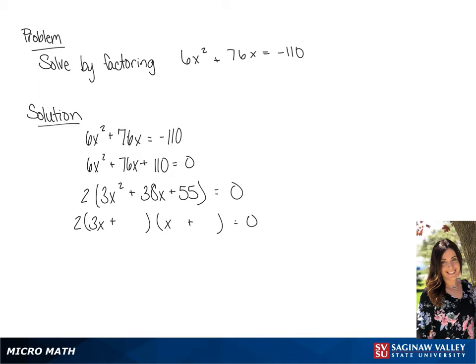And our second terms are going to be factors of 55. So we have 5 and 11. So we have 2 times 3x plus 5 times x plus 11 is equal to 0.